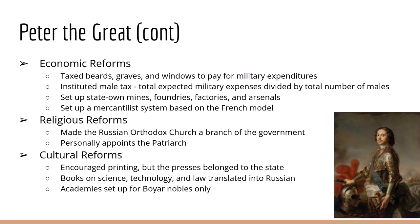Regarding religion, the Russian Orthodox Church was led by a patriarch who died in 1700. Peter did not replace the patriarch; instead he made the Russian Orthodox Church a branch of the government and appointed a minister to run the religion. Peter also encouraged printing and some free speech, but all printing presses were owned by the government, so the government controlled what was published. The first newspaper opened in 1703. Most books covered science, technology, western history, and law — all translated into Russian. Peter also established the first public theaters, first museums, and first hospital.